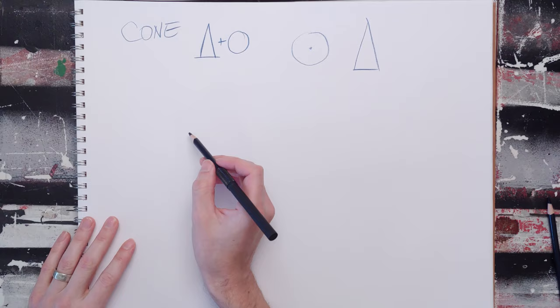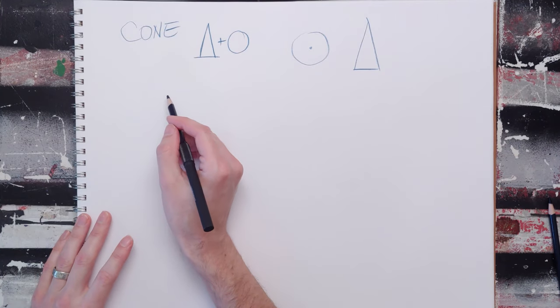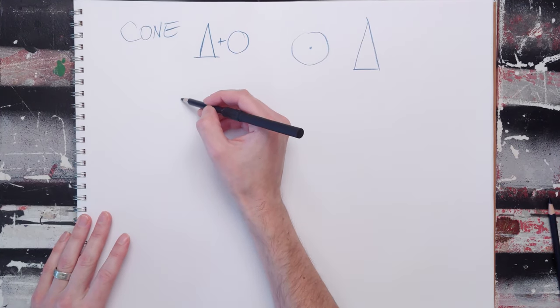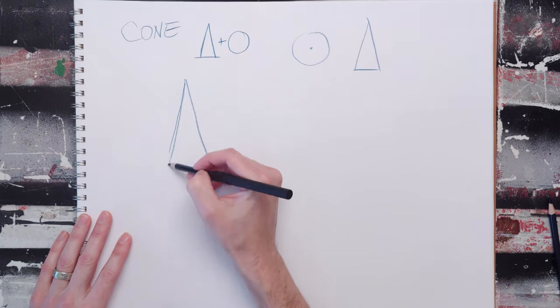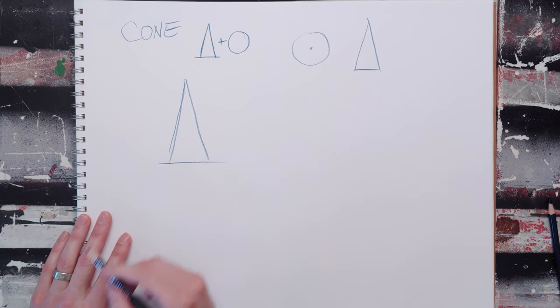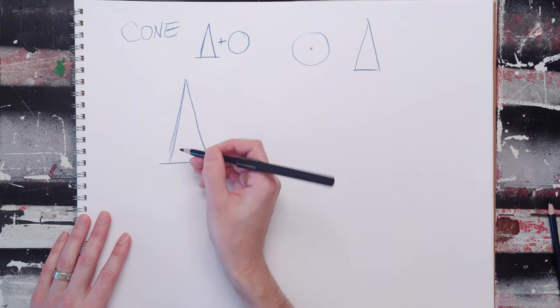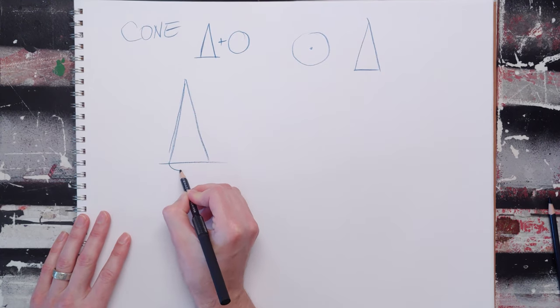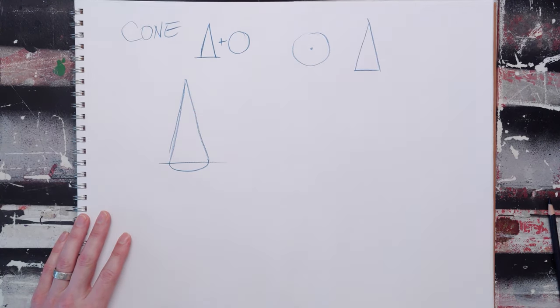There's only basically two variants of cones that you can draw. One of them is the one-sided cone. You draw your triangle and then convert it to form by adding an arc down at the bottom.